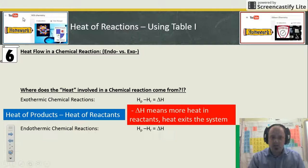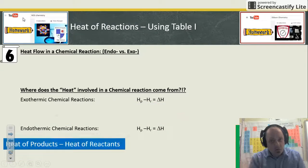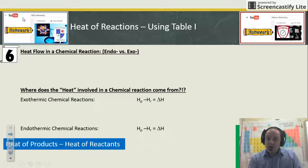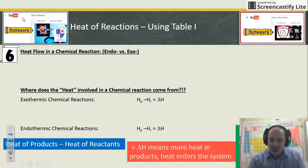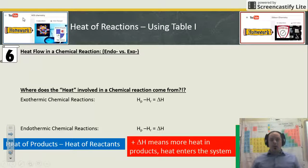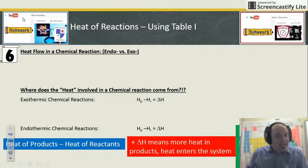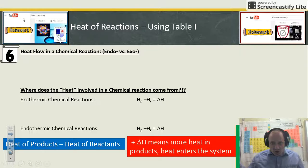The opposite's true as well. We still figure out heat of products minus heat of reactants to find the overall heat of reaction. But if our delta H is positive, it means that our products have more energy heat-wise than the reactants did, so they absorbed that energy from somewhere and heat has entered the system.